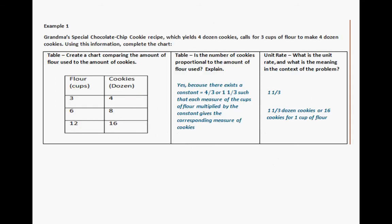For example one about grandma's chocolate chip cookie recipe, you should have a table based on four dozen cookies requiring three cups of flour. Once you make a table showing flour in cups and cookies in dozens, you would have: three cups to four dozen cookies, six cups to eight dozen cookies, twelve cups to sixteen dozen cookies, and so on and so forth.